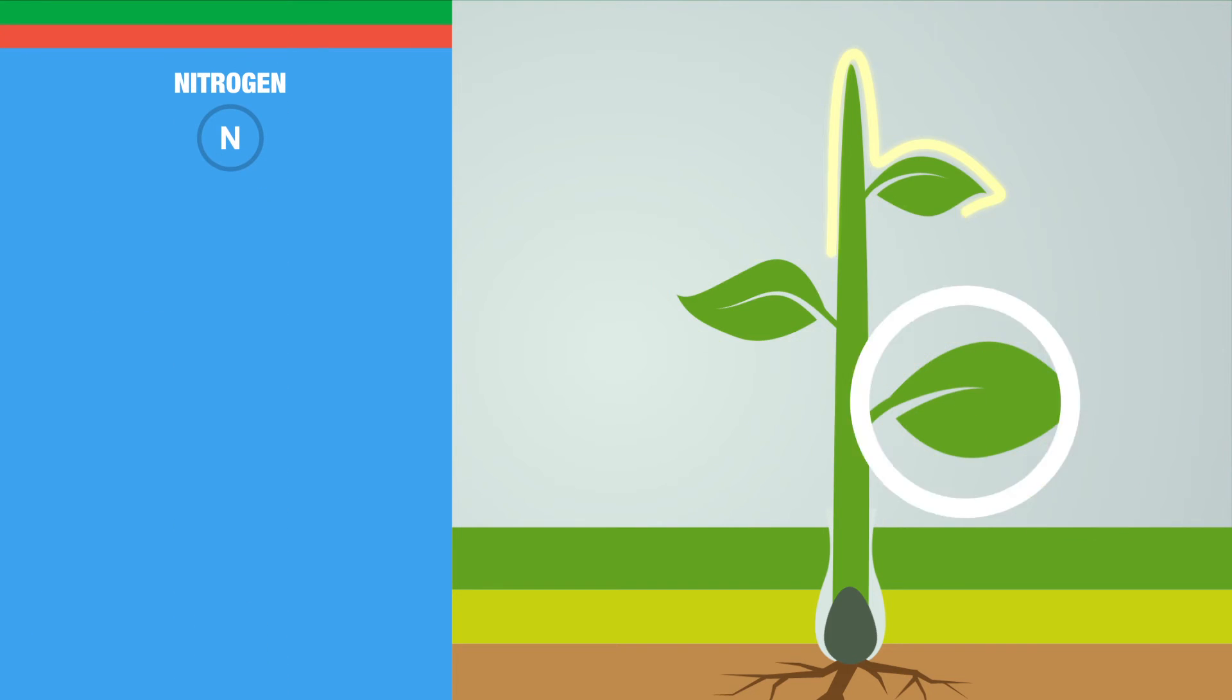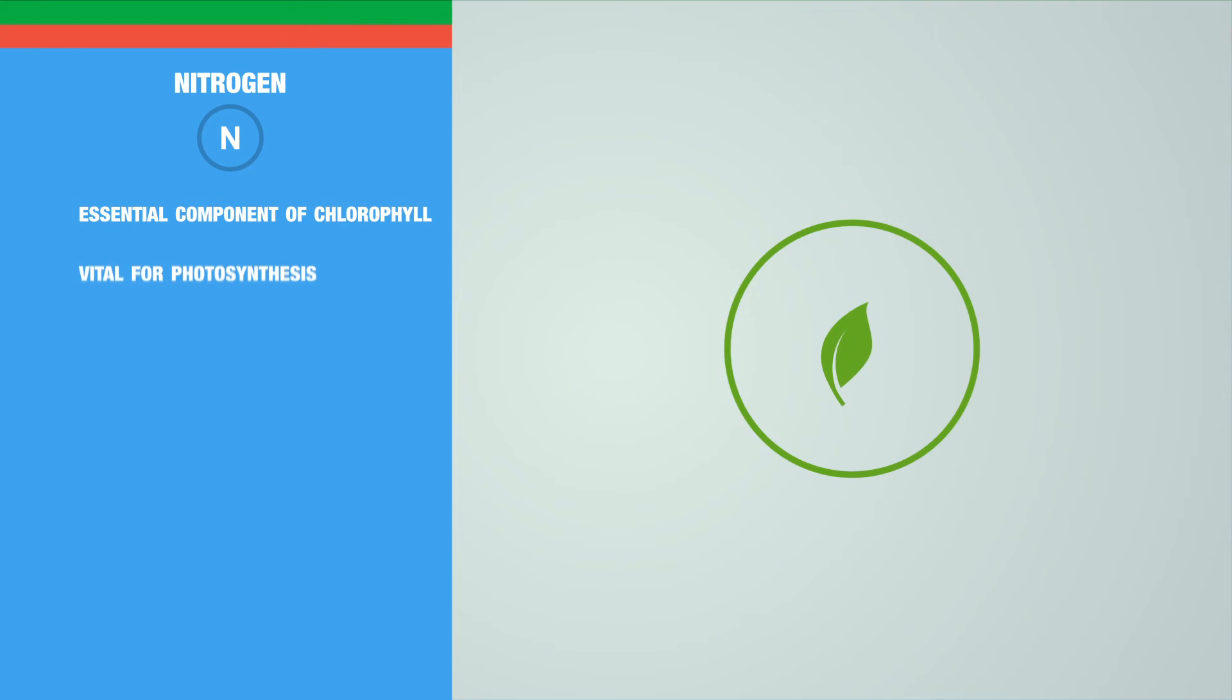As for nitrogen, it's an essential component of chlorophyll, vital for photosynthesis and the plant's vegetative growth.